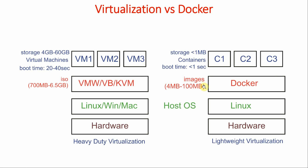All these images are available on hub.docker.com. Another major difference is boot time: booting a VM takes 20 to 40 seconds, but starting a container takes less than one second. When creating VMs, hard disk storage required is 4 GB to 60 GB, while for Docker containers it is less than 1 MB — almost negligible. RAM required for containers is also very low, whereas for VMs it is in the range of 1 GB to 4 GB.